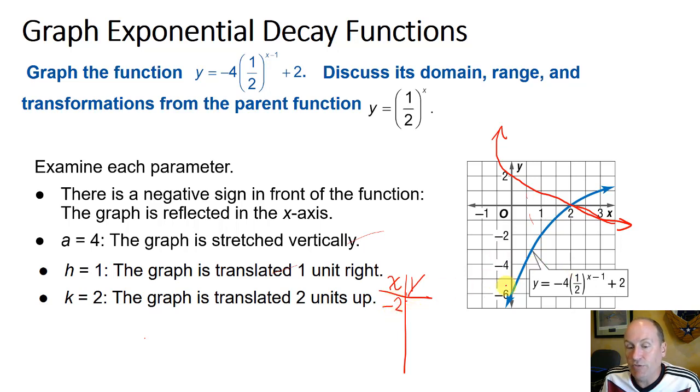We'll pick negative 2. If we put in a negative 2 for x, we get negative 4 times 1 half to the negative 2 minus 1 plus 2. So that's negative 4 times 1 half to the negative 3, or 1 over 8. This is going to be negative 4 times 8 plus 2, or negative 32 plus 2, which is negative 30. If we put in negative 1, we're going to get negative 4 times 1 over 2 to the negative 2 plus 2. That gives us negative 4 times 4, or negative 16 plus 2, negative 14. At 0, we get negative 4 times 1 half to the negative 1 plus 2, so that's negative 4 times 2, negative 8 plus 2, negative 6. So we've got negative 2 comma negative 30 off the chart, negative 1 comma negative 14 also off the chart, and 0 comma negative 6.